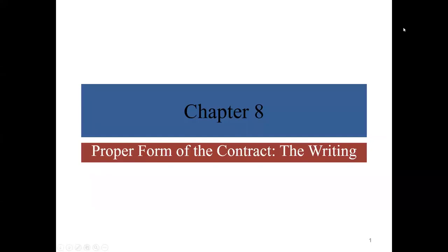Welcome to this presentation, the first in this series covering chapter 8 in our textbook. The name of this chapter is 'The Proper Form of the Contract: The Writing.' As we've covered in previous chapters, there are four elements to contracts: we need to have an agreement, consideration, legal capacity, and legal object. Each of those four requirements has a variety of sub-requirements, but those are the four things we need in order to have a contract.